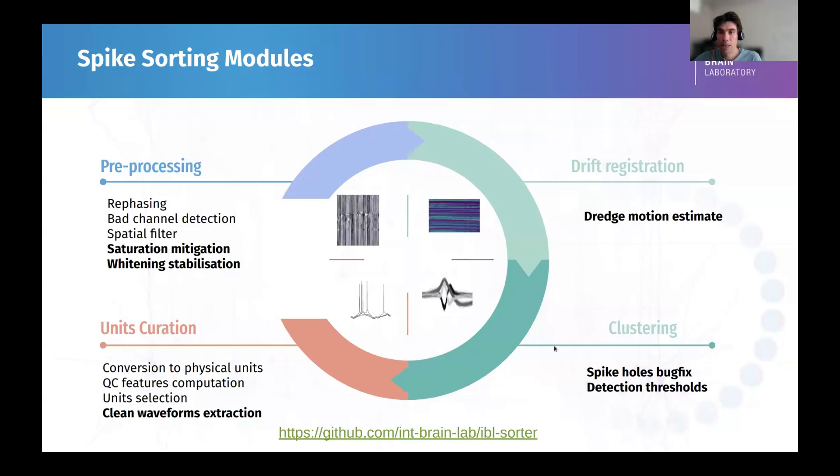Then, in the clustering, we kept the original clustering of Kilosort. We just found a little bug where we didn't detect data at regular intervals, so we fixed this, and we also fixed the default detection thresholds. I'm going to show some examples of this. At last, it's mainly going to be covered by Chris Longfield tomorrow, but we created some additional quality metrics on top of the one already used, and we did a better, cleaner waveform extraction. This is going to be more covered by Chris tomorrow.